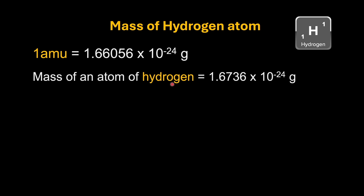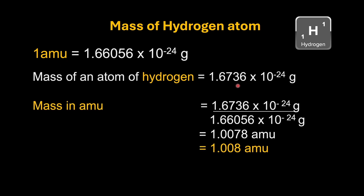To find the mass of hydrogen in AMU, we divide the mass of one hydrogen atom (in grams) by the mass of one-twelfth of the carbon-12 isotope. When we divide, we get approximately 1.0008 AMU as the mass of the hydrogen atom. It is worth noting that when we use atomic masses of elements in calculations, we actually use average atomic masses.